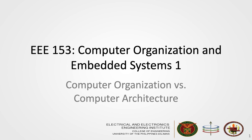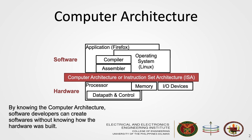Welcome back everyone! In the previous video, we discussed computer systems, its four major tasks, and its hardware and software components. We also emphasized that designing the hardware and developing the software are done separately by two groups of people. What links the hardware and the software together is the computer architecture. By knowing the computer's architecture, software developers can create software without knowing how the hardware was built.